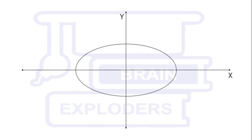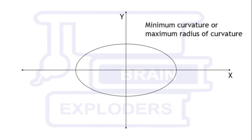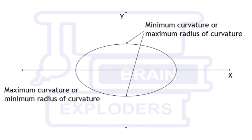Suppose this is the ellipse whose center is on the origin of the Cartesian plane. In this ellipse the major axis lies along the x-axis and the minor axis is along the y-axis. The points where the ellipse has maximum radius of curvature are those points where it intersects the y-axis. Similarly, the points where the ellipse has minimum radius of curvature are those points where it intersects the x-axis.